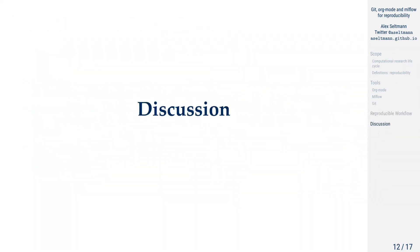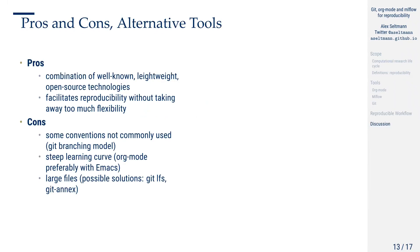For a short discussion — pros and cons of this approach. The pros are that it is a combination of well-known, lightweight, open-source technologies, and it facilitates reproducibility without taking away too much flexibility from the user. The cons are that some conventions are not commonly used, like this Git branching model. Some tools have a steep learning curve — org mode is not straightforward to learn, and the preferred editor is Emacs to really leverage its full power. Lastly, for really large files, Git is not ideal; there are tools like Git LFS or Git-annex, but they are not directly part of this approach.